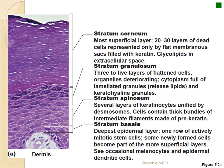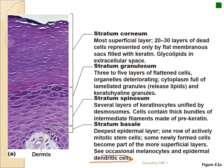Also in the stratum basale you find melanocytes, which deposit brown pigment into the cells moving upward. When you get a tan, the new stratum basale cells have pigment put into them after sun exposure, and as those cells move up your skin looks darker. Once you're no longer in the sun, when those upper layers disappear the tan disappears with them. Also in that layer we find dendritic cells — those macrophages that wait as guardians for anything trying to penetrate that barrier.